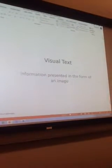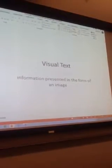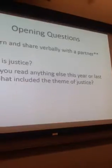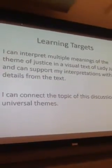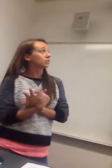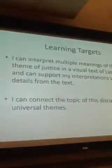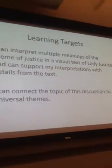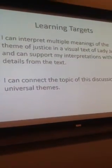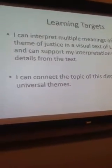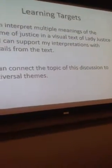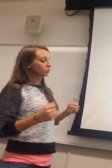A reminder that a visual text is information presented in the form of an image. Our learning targets today: first, I can interpret multiple meanings of the theme of justice in a visual text of Lady Justice and support my interpretations with details from the text. Second, I can connect the topic of this discussion to universal themes. Turn to the person next to you, quickly summarize these, and make a guess of what we're doing in class today.